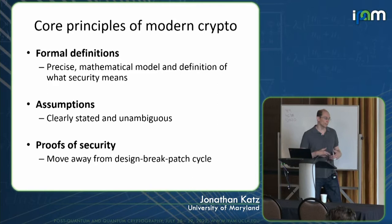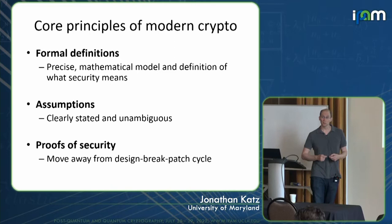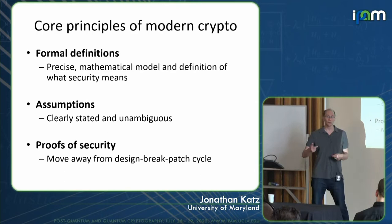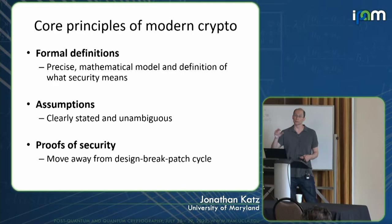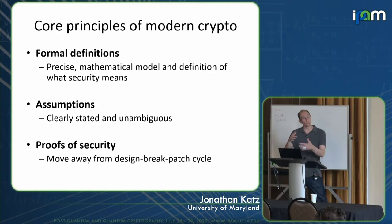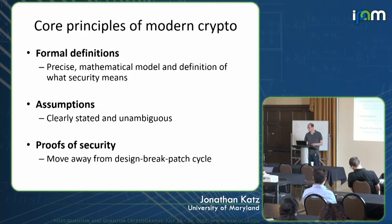We also want to give proofs of security for the schemes we develop — take a particular scheme, point to a particular definition, and give a proof showing that the scheme satisfies that definition. This was a real departure from what happened prior to the 1980s, where analysis was more heuristic and ad hoc. In general, it's often not possible to give unconditional proofs of security; instead we give conditional proofs based on particular assumptions, which need to be made explicit and written out formally enough to use in proofs and determine whether they are reasonable.